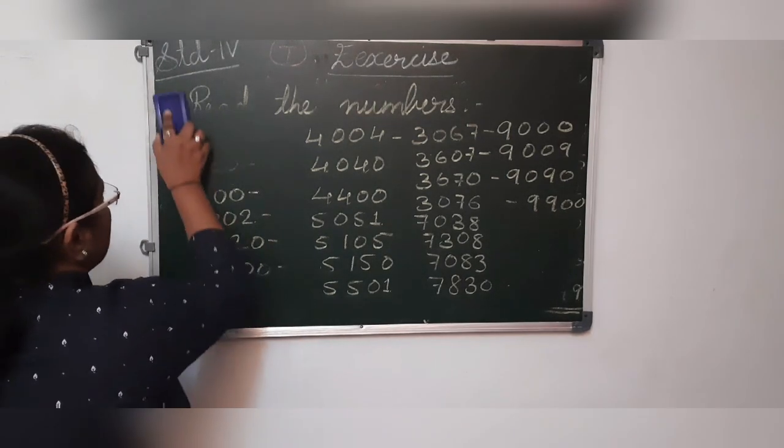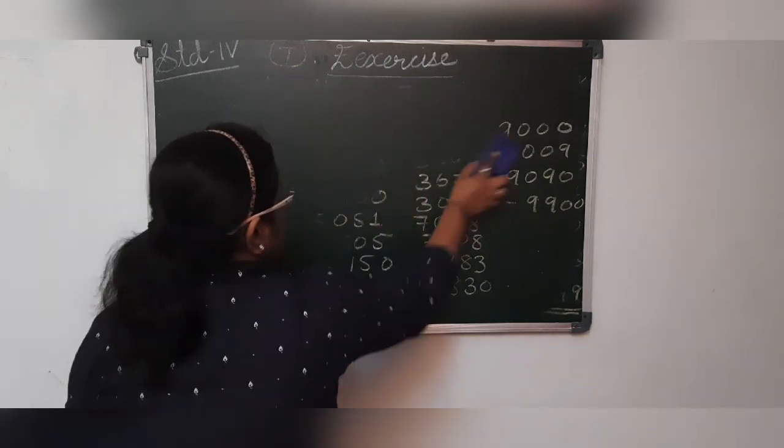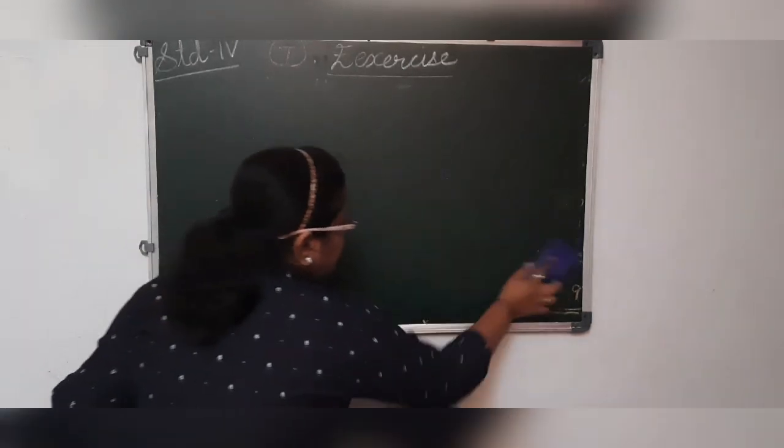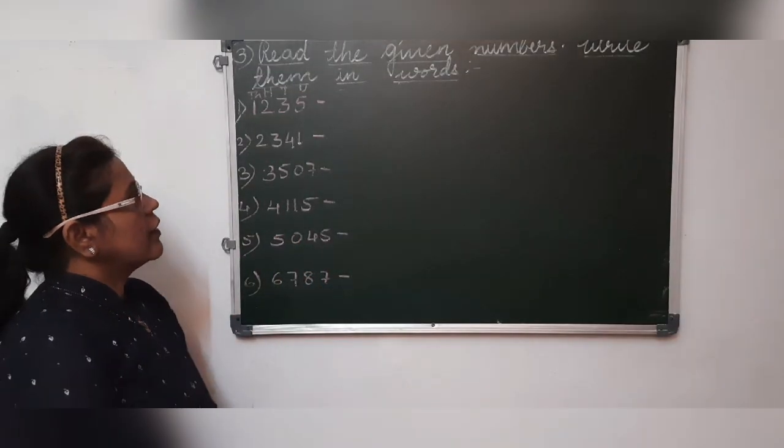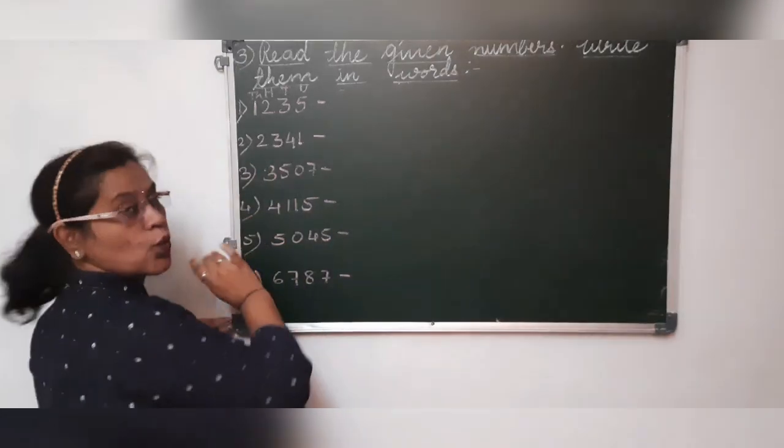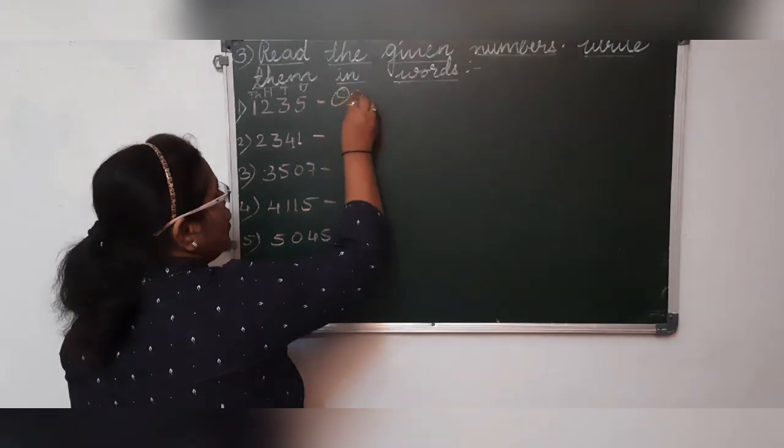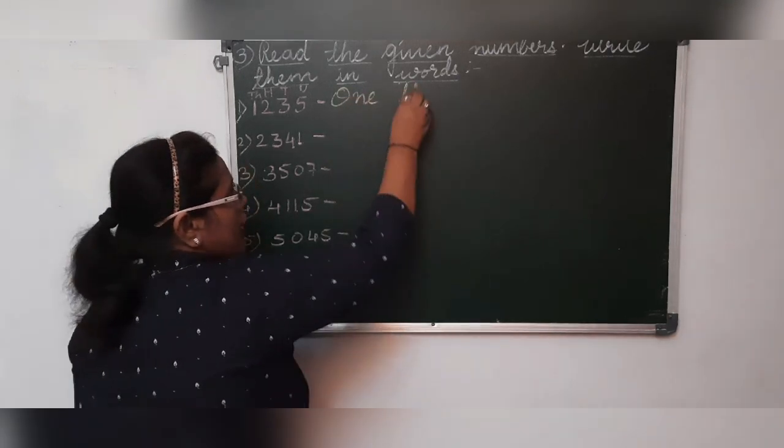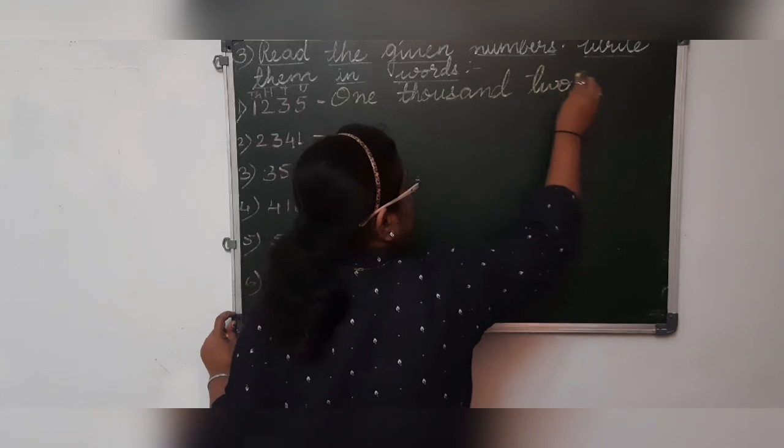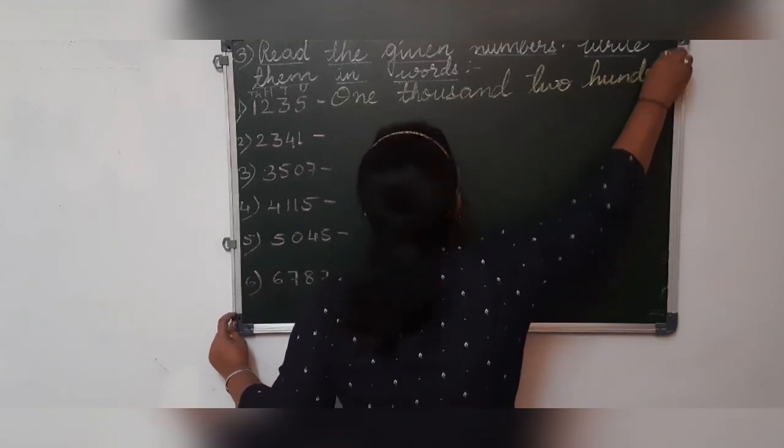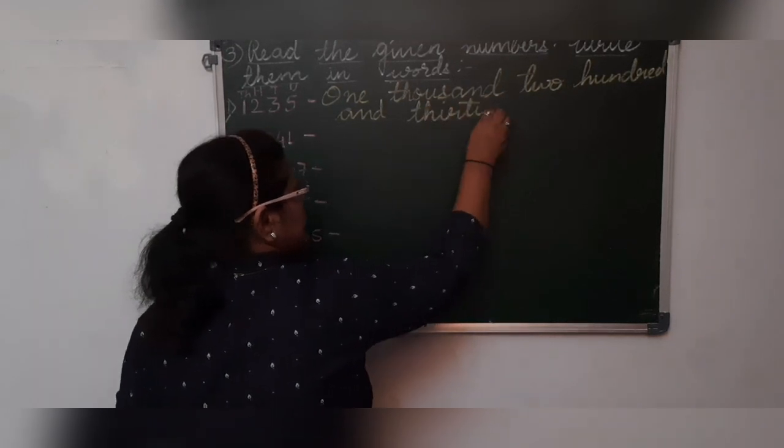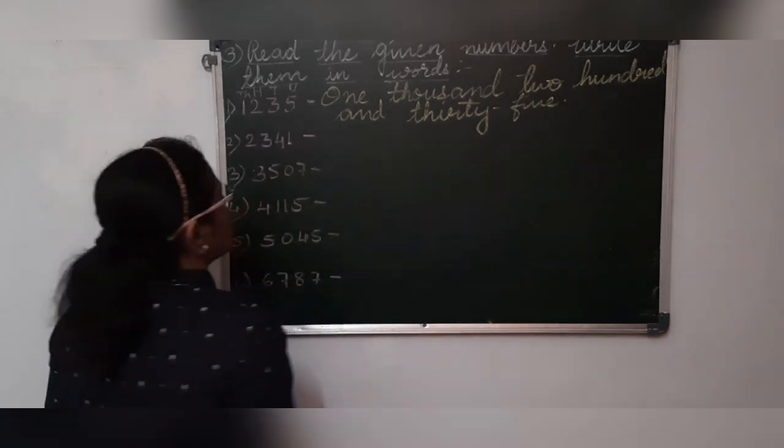We will start with the third sum. Now you can see here I am going step by step. Each and every sum I am taking only for you my dear students. So be attentive and follow me. Already the questions are there on the board. We will start reading and writing the numbers. Four digit numbers. So read the first number.